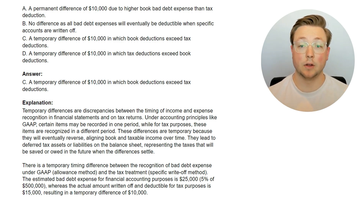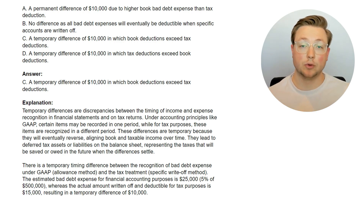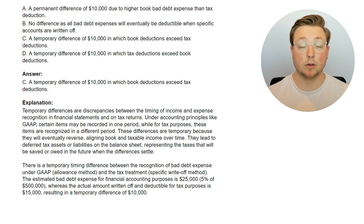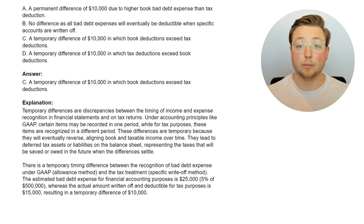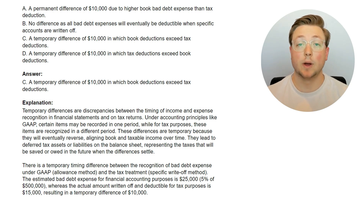This is kept track of on the Schedule M3, which is basically a more elaborate Schedule M1. When it comes to bad debt expense, for tax purposes you can only recognize the bad debt expense that actually happened — the things that actually fell through — whereas for book purposes you may have recorded it differently. So you have to report that temporary difference on the Schedule M3.